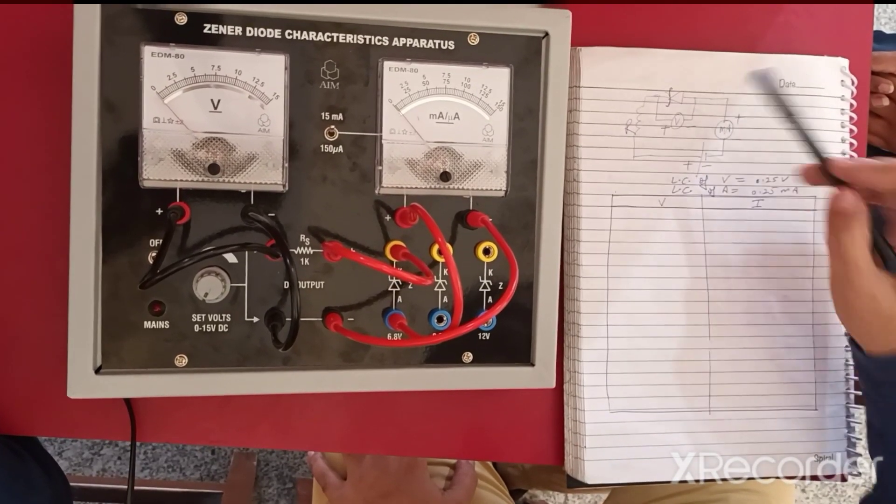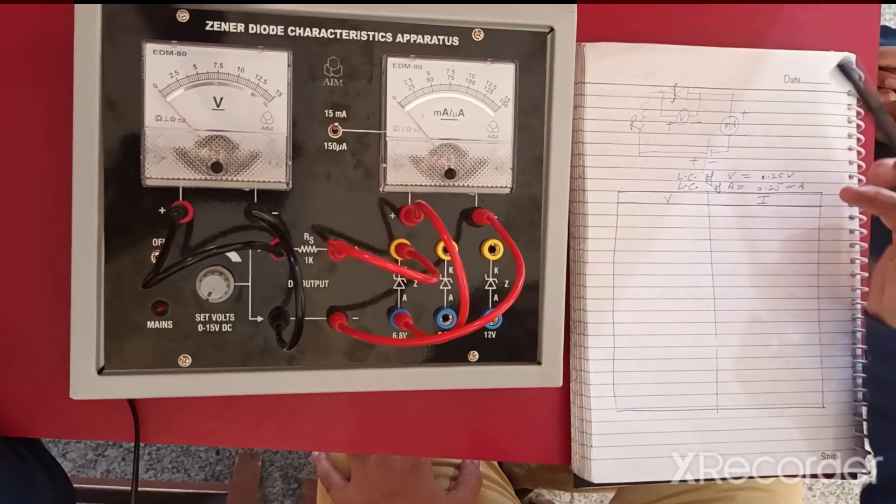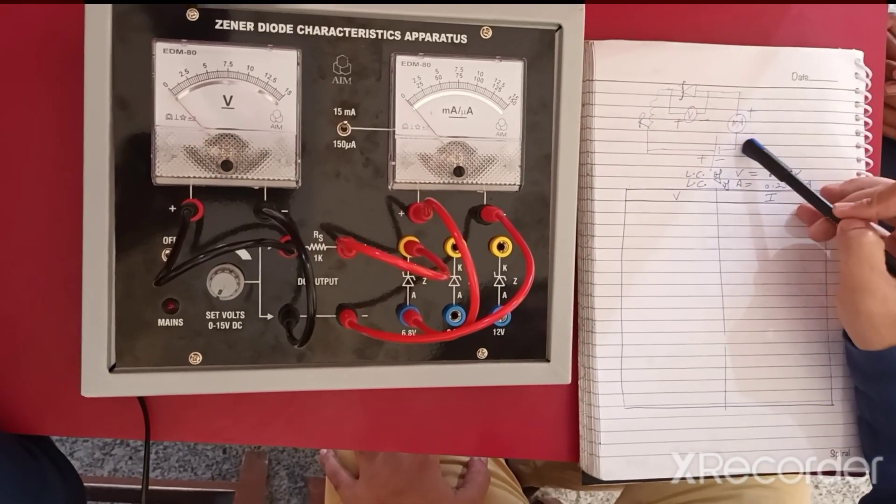This is the diagram where the Zener diode is connected with the voltmeter in parallel, and this is further connected with the milliammeter.